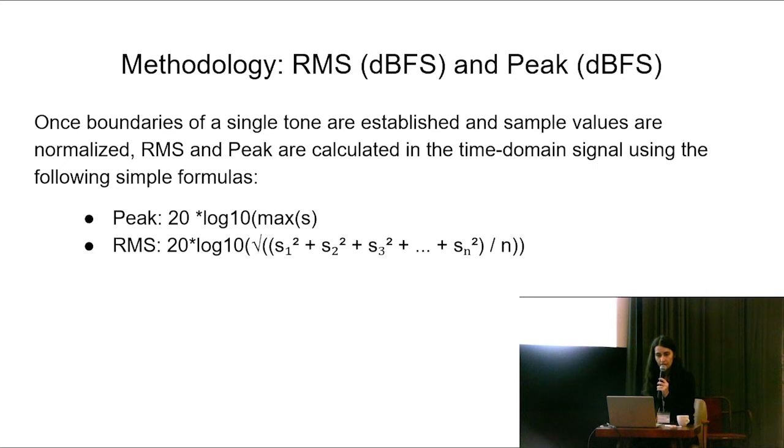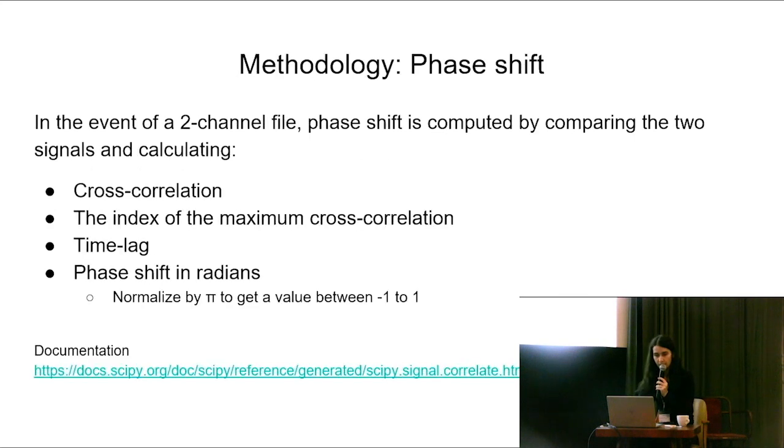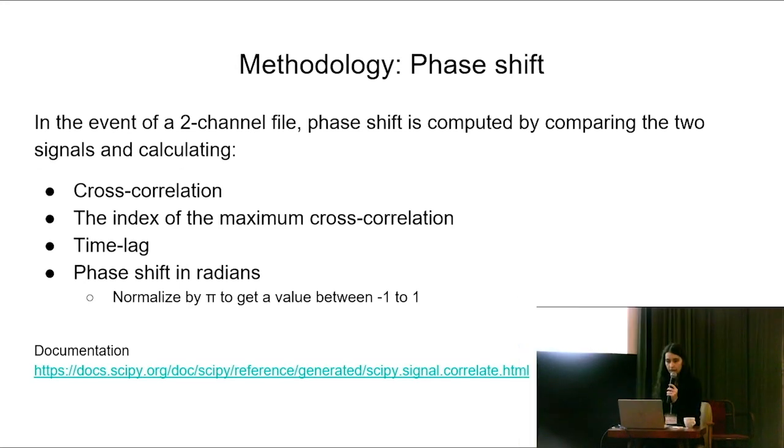For RMS and peak, once I establish the boundaries of a tone, I normalize the sample values and use those formulas. And with phase shift, this is relevant to only two channel files. I compute that by comparing the two signals and calculating the cross correlation, the index of the maximum cross correlation, time lag, and the phase shift in radians. I normalize that by pi to get a value between negative one to one, because that's what Adobe Audition shows, and that's the values that the NYPR team are accustomed to reading.